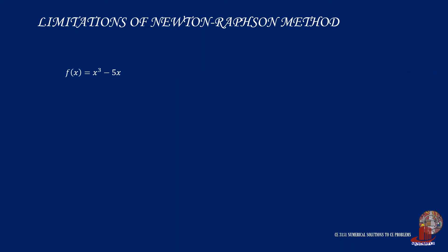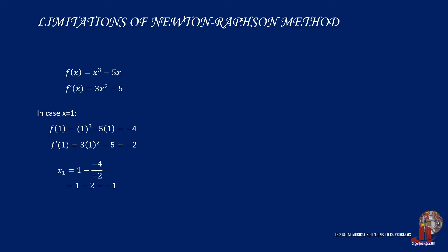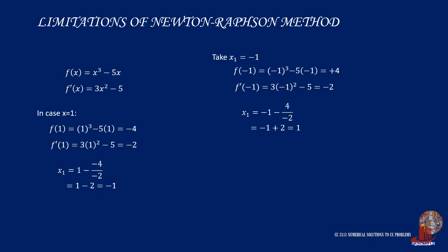Here is another case. Given a function f(x) and its derivative f′(x), starting with x₀ = 1, f(x₀) = −4 and f′(x₀) = −2. Placing these in the formula gives x₁ = −1. In the second iteration with x₁ = −1, f(x₁) = 4 and f′(x₁) = −2. Taking these values into the formula gives +1, which brings us back to the initial guess.